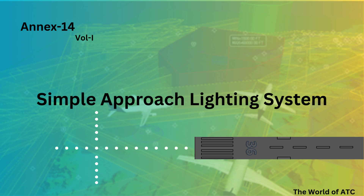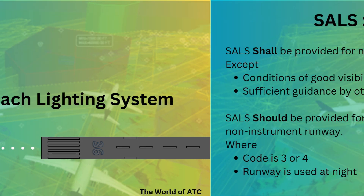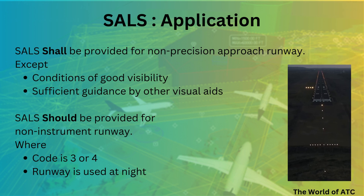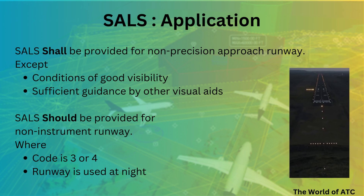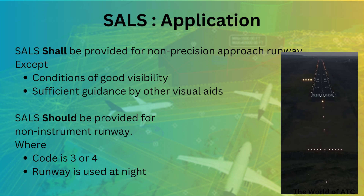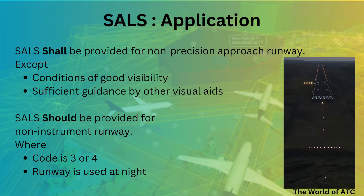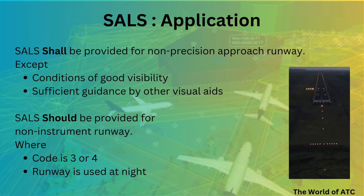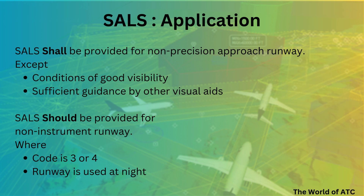Let's start our next topic: the Simple Approach Lighting System. According to ICAO Annex 14 Volume 1, the Simple Approach Lighting System shall be provided for any runway that is a non-precision approach. However, exceptions are made for runways with good visibility conditions and if they are guided sufficiently by other visual aids.